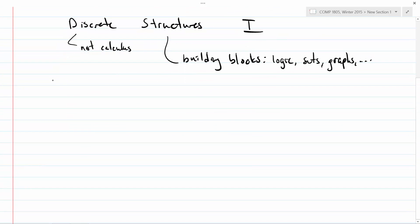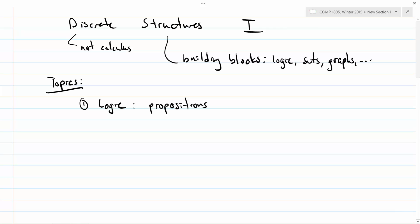We cover quite a few topics in this course, and that's one of the things that makes it a little bit challenging. The first thing we're going to focus on is logic. There are a couple of different kinds of logic we'll talk about — propositions, predicates, and arguments. You might ask why you'd ever care about things like that. Your programming language has some way of dealing with logic — ands and ors and nots. But logic is a pretty important building block, for example in knowledge representation, which is an important topic in computer science.